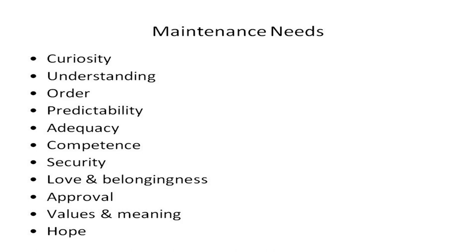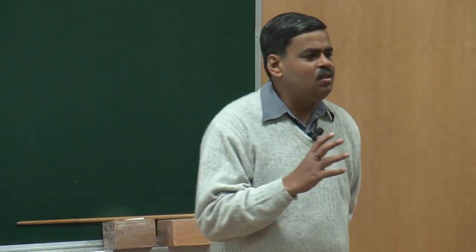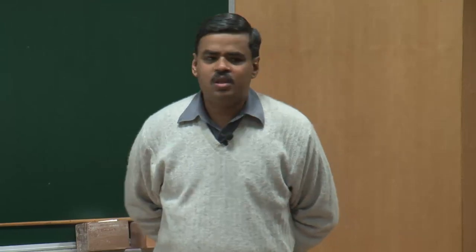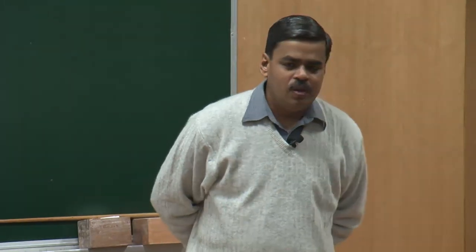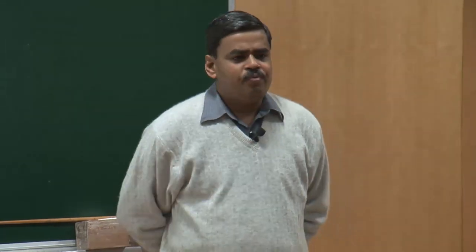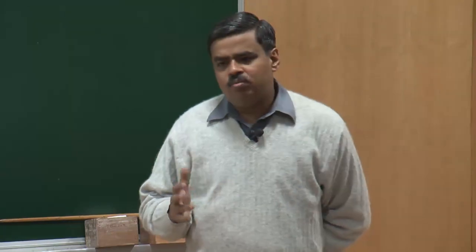The next most important maintenance need is adequacy, which basically is a source of information for oneself in terms of helping you go into auto-correction mode. In terms of realizing what would be sufficient for you, given the particular type of situation you are experiencing and the set of expectations that people have from you. Adequacy plays an extremely important role in making you realize whether what you have done is adequate enough or you need to do more.